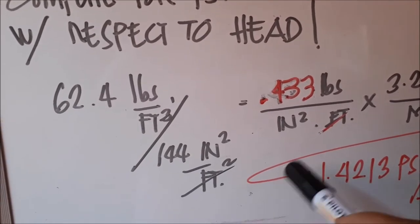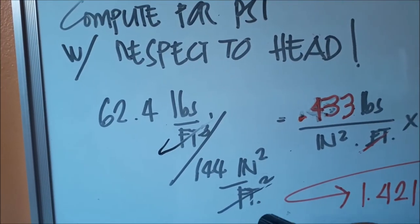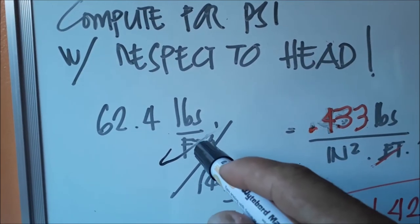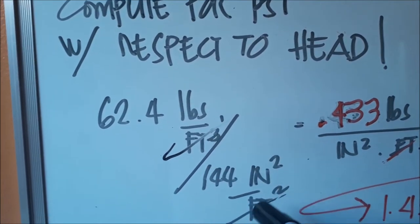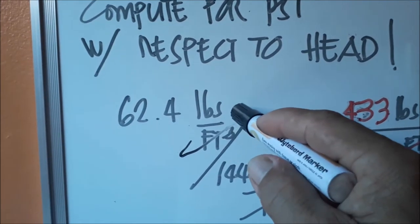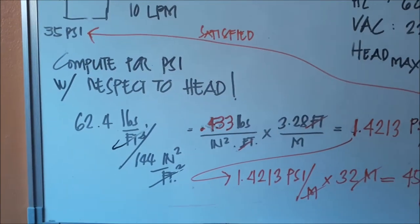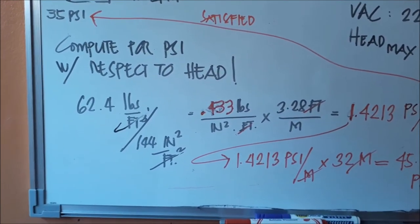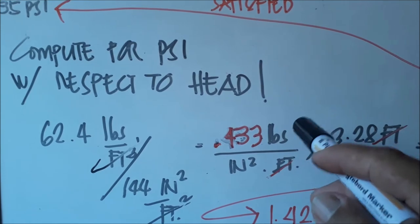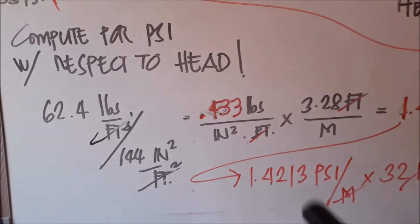Cancel these, cancel. The feet cancels out, leaving just feet. It was feet raised to 3 initially, and then we have feet raised to 2, so after canceling it becomes 1, just feet remaining. Divide 62.4 by 144 to get PSI per foot. The result is 0.433 pounds per square inch per foot.